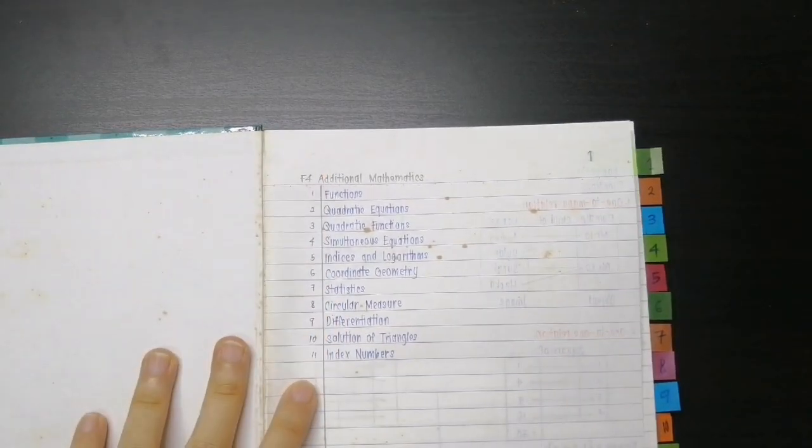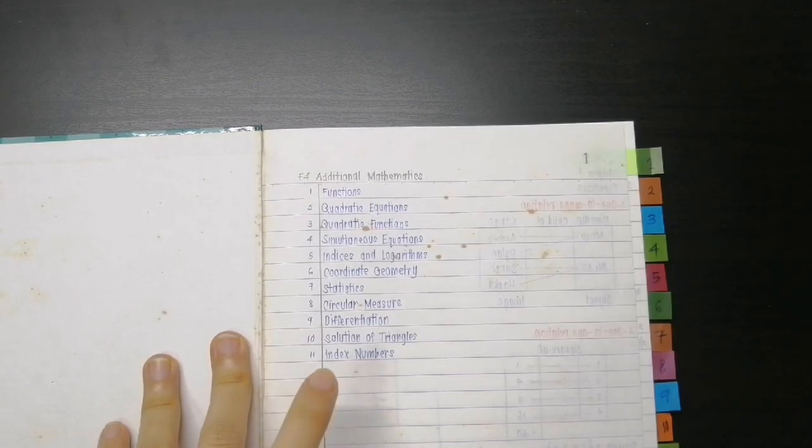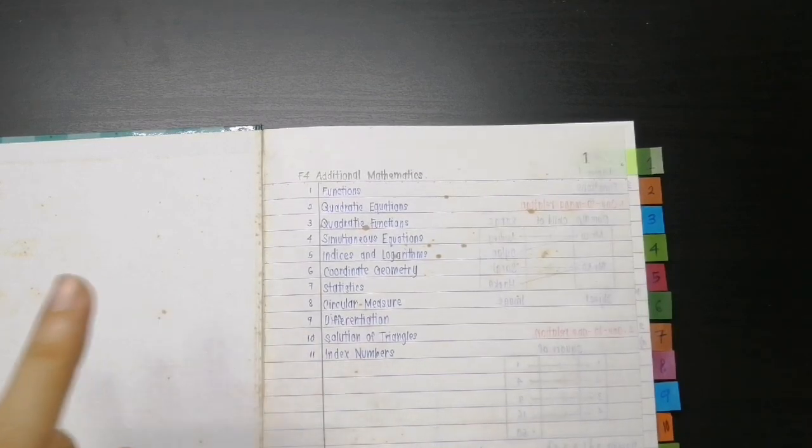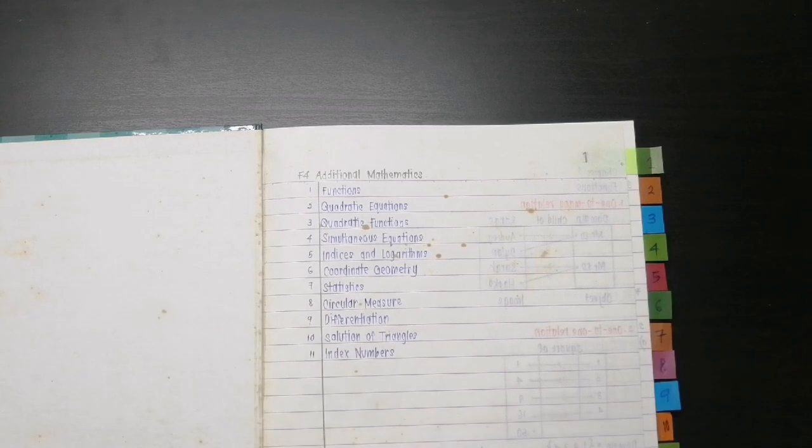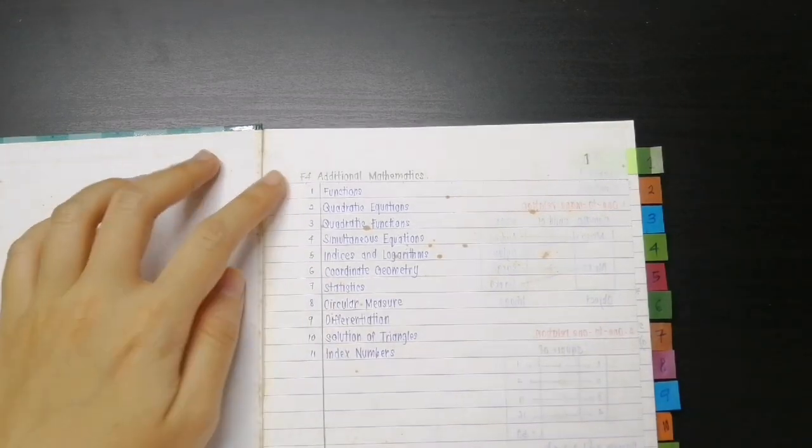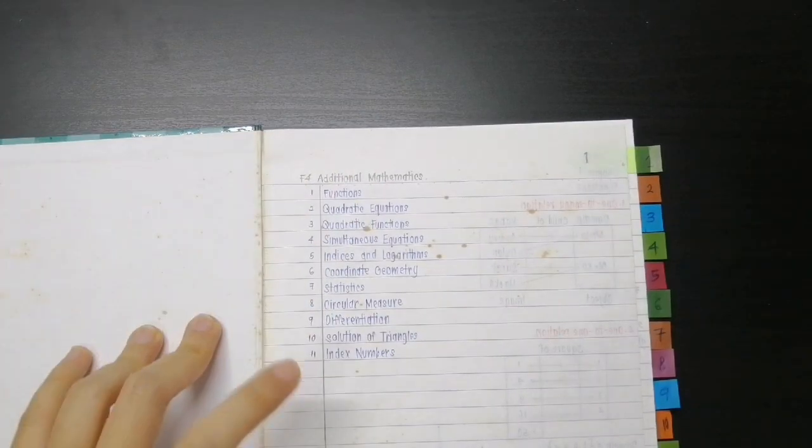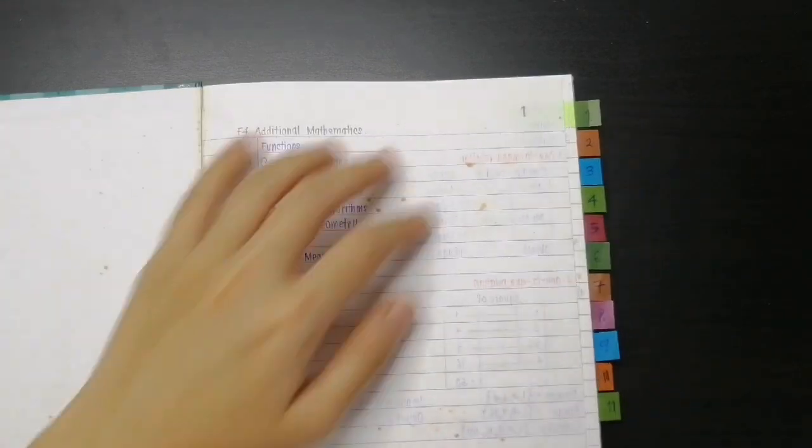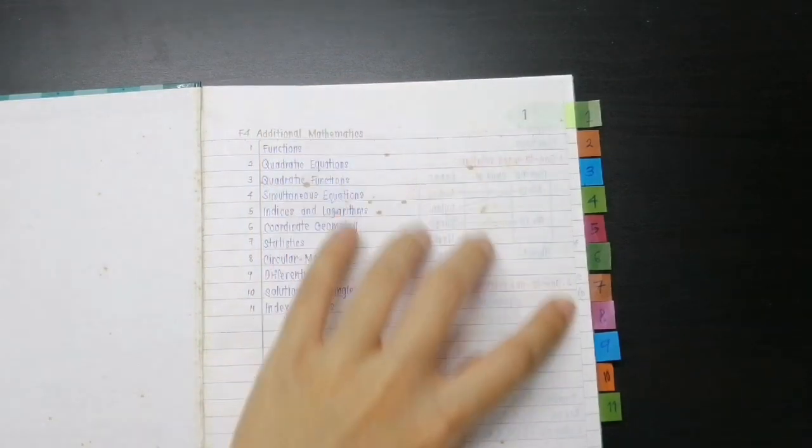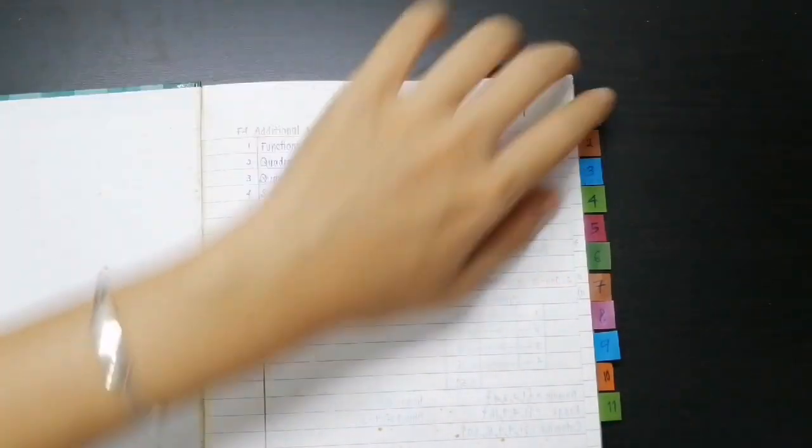So here's the table of contents. You can see that my handwriting evolved a lot actually from when I was Form 4, I was 16 at that time. But basically for Form 4 Additional Mathematics, I have the table of contents here and then I marked every single chapter with this sticky note so it's very easy to flip through.